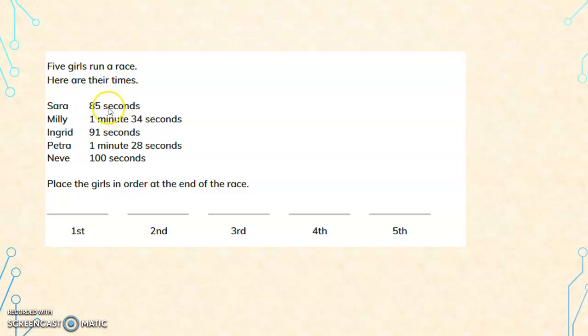Sara completes in 85 seconds, Millie 1 minute and 34 seconds, Ingrid 91 seconds, Petra 1 minute and 28 seconds, Neve 100 seconds. Place the girls in the order at the end of the race. First position, you have to arrange it in ascending order. The person who has taken the least time is first and the person who has taken the most time is last. Here, when you look at it, you can see it is given in different units.